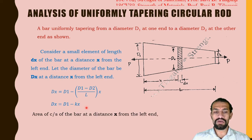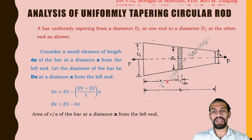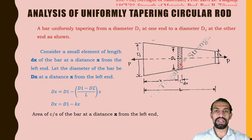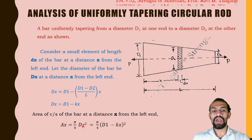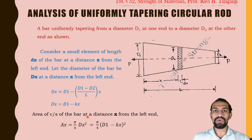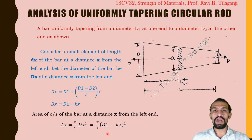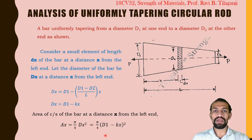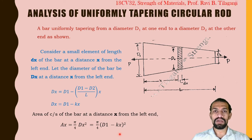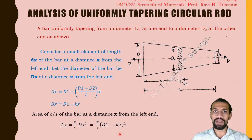The area of cross-section of the bar at a distance x from the left end is calculated as: for a circular section, Ax equals (π/4) times dx squared. Substituting dx equals D1 minus Kx into the area equation gives Ax equals (π/4) times (D1 minus Kx) squared.